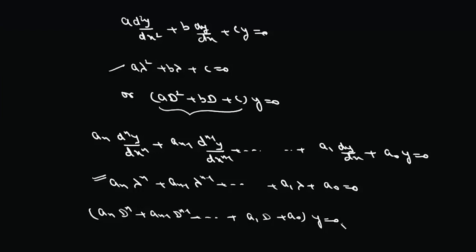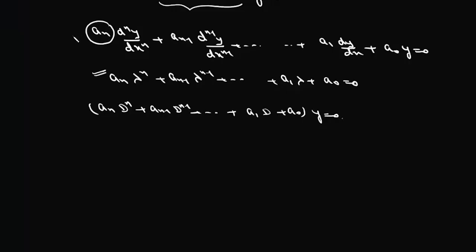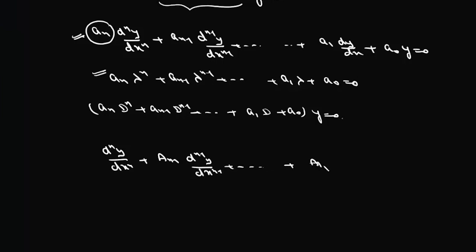Once we have different values of λ or D, we can write the solutions as we have done for second order differential equations. One thing to keep in mind is that in many theorems the coefficient of the highest derivative is usually one, so it is better practice to make this coefficient one. Rather than writing it in the general form, we divide everything by aₙ to make this coefficient one.